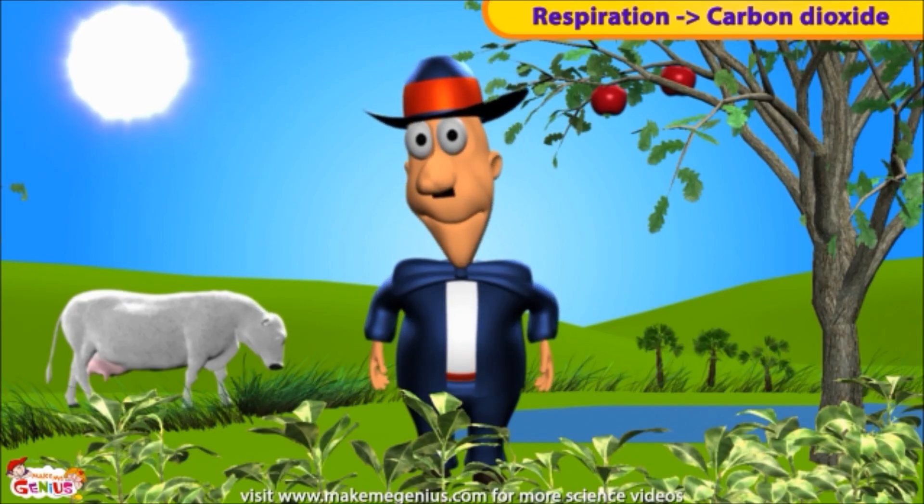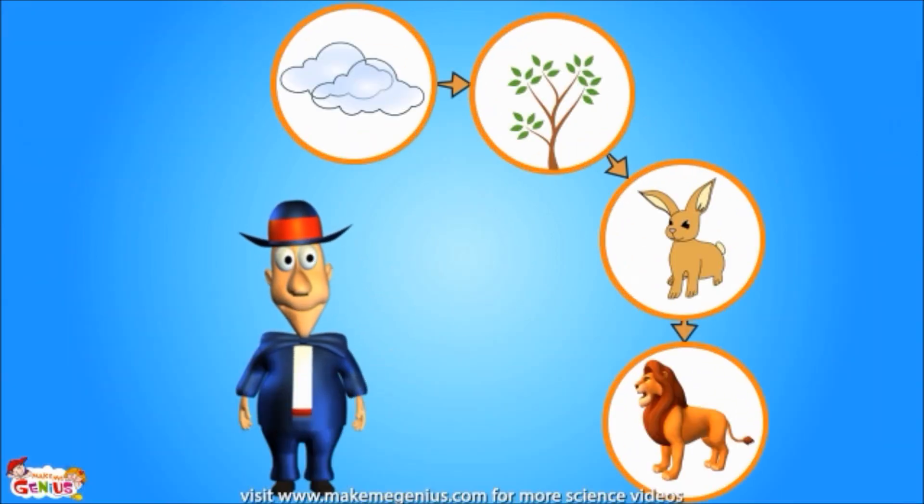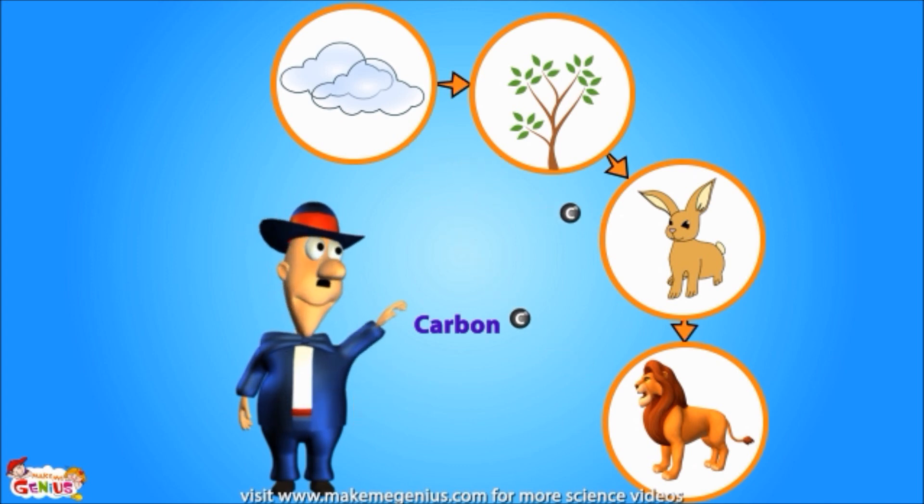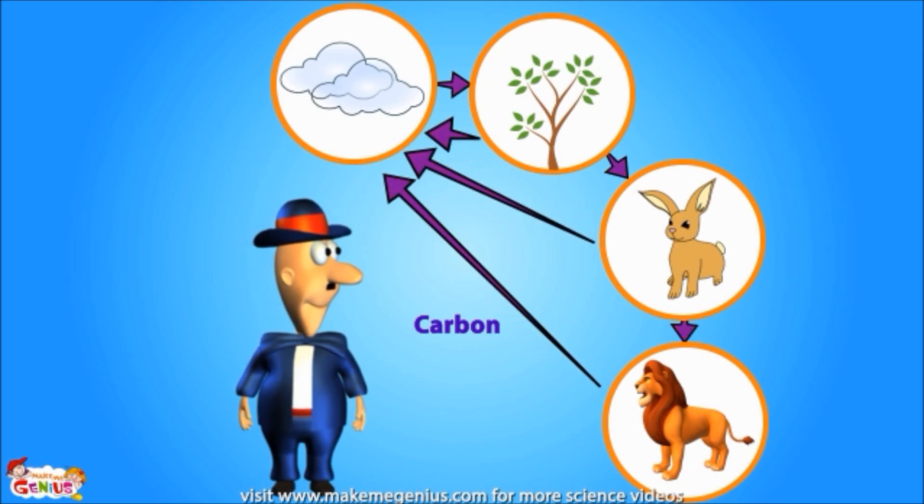So, how does carbon move from the atmosphere to living things and back? You are right! Plants breathe in carbon dioxide to make food. Then, this food is eaten by animals. Sometimes, smaller animals are eaten by bigger animals. This way, carbon is transferred from air to plants and animals. Animals and plants breathe out carbon dioxide. Then it goes back into the air.